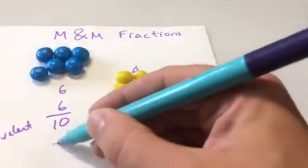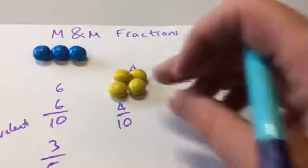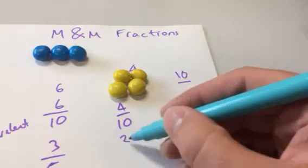Three fifths. Divide them both by two. So those ones could be eaten. And this one? Two fifths.